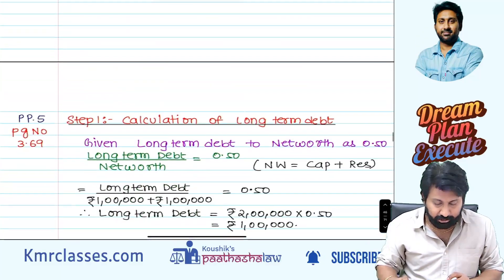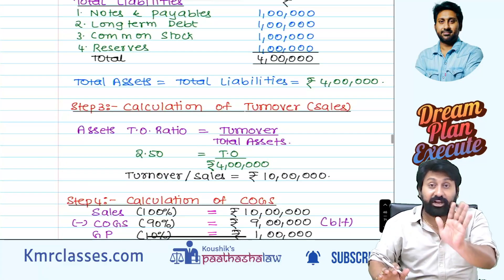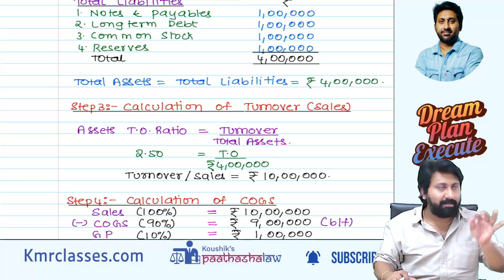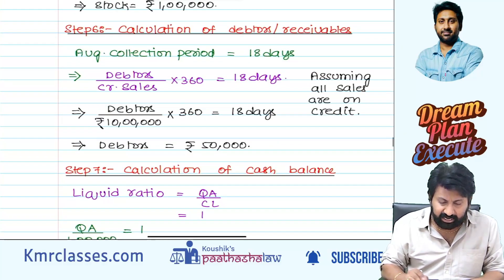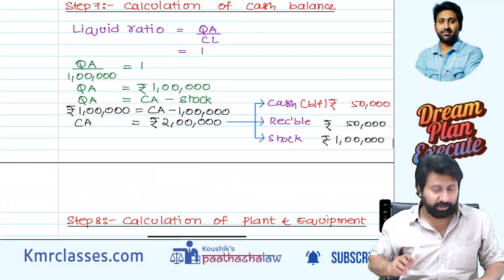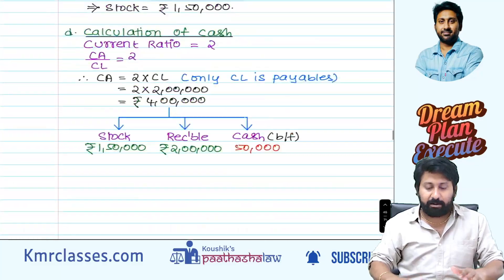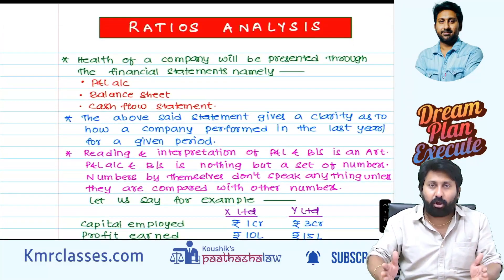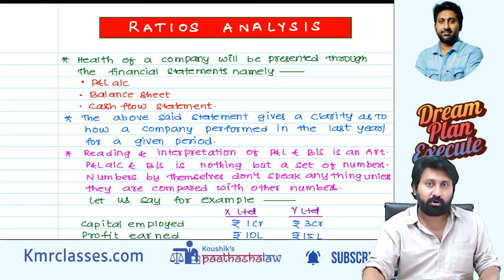Stock turnover ratio, current ratio, long-term debt to net worth, inventory turnover (COGS by stock), average collection period (debtors by credit sales — assuming all sales on credit if nothing is given), liquid ratio, balance sheet preparation — these are all covered. These are important adjustments in the ratio analysis chapter. Visit the ICAI study material illustrations and practical problems and go through the questions and answers. Six to seven marks will surely come in the exam.